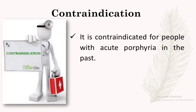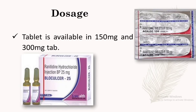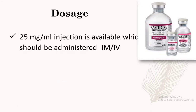Ranitidine should not be given to patients with acute porphyria in the past. Acute porphyria is the condition in which porphyrin is unable to convert to heme due to enzymatic defects. Ranitidine is prescribed mainly as 150 mg twice a day or 300 mg once daily at night. It is also available in injection form at 25 mg per ml concentration and used in emergency conditions.